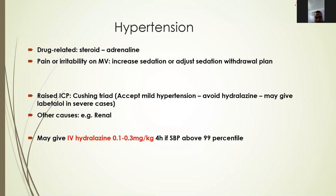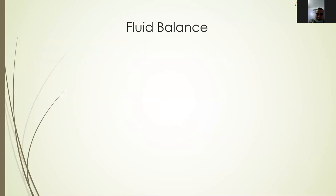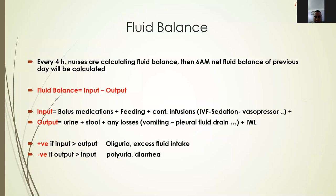The next topic is fluid balance. Fluid balance is not a very important topic in general ward settings, but in the ICU it is very important because it gives us a rough indicator of volume status. In our ICU, nurses calculate fluid balance every four hours, and at 6 a.m. they calculate the net balance of the previous day. It equals input minus output. Input includes all bolus medications, feeding, and continuous infusions including IV fluid, sedation, and vasopressors. Output includes urine, stool, and any losses such as vomiting, drain fluid. If the patient has oliguria or excessive intake, there will be positive balance; if too many losses, negative balance.